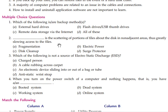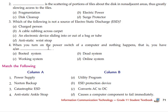Multiple choice questions: which of the following is a backup method? External hard disk drive, hard drive, flash drive, remote data storage through the internet — all of these answers. Blank is the scattering of file fragments about the disk in non-adjacent areas, greatly slowing access to the files — that is fragmentation. The answer is fragmentation.